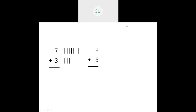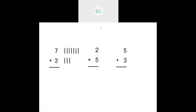For two plus five: draw two tallies, then five tallies. When you count them all — one through seven — two plus five is seven. And for five plus three: draw five tallies and three tallies, count them — five, six, seven, eight — so five plus three is equal to eight.